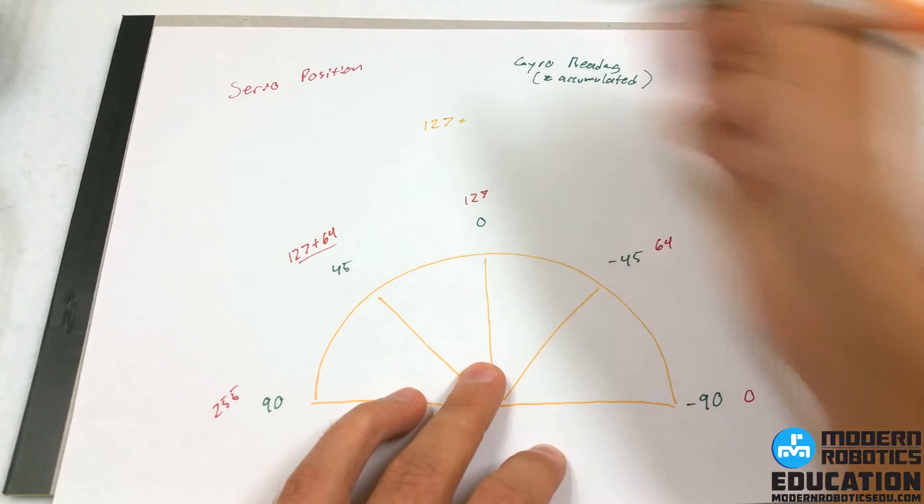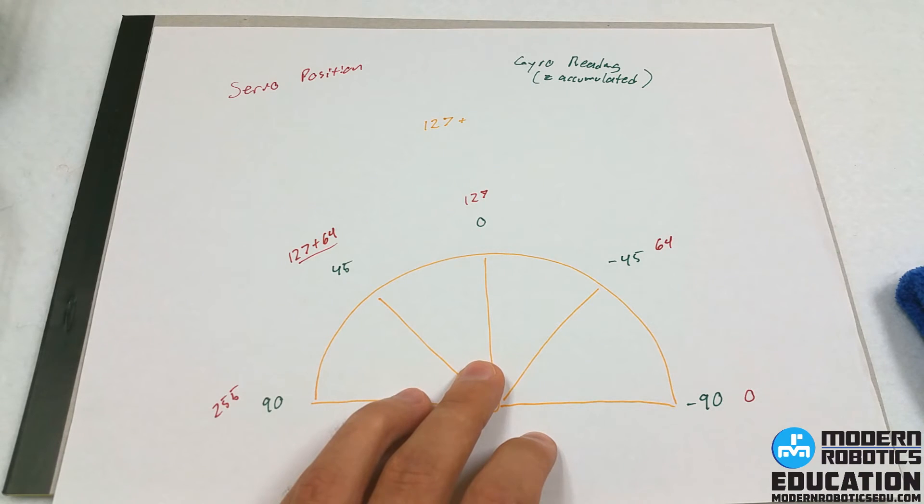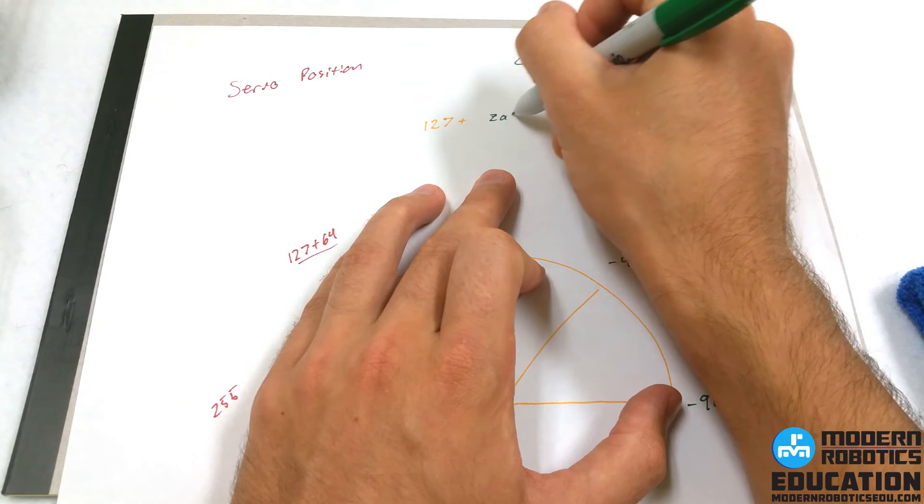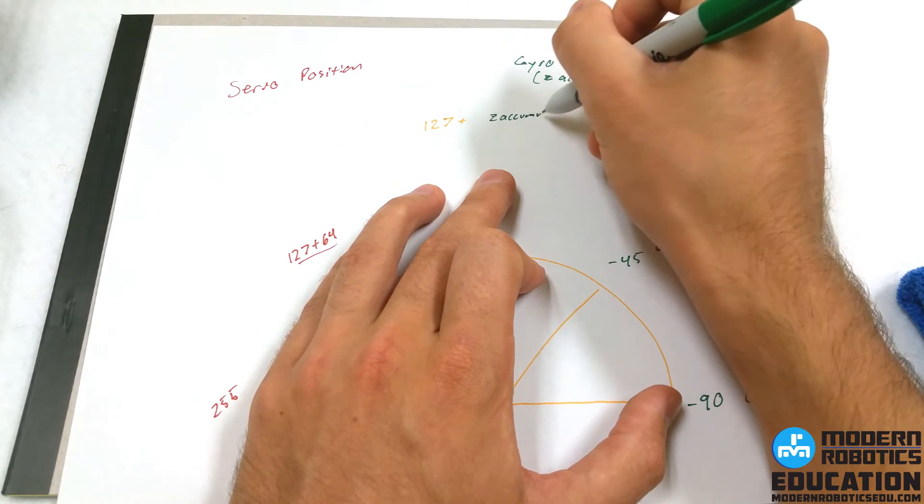I'm going to say 127 plus, and there we'll have our gyro reading. Say Z accumulated.